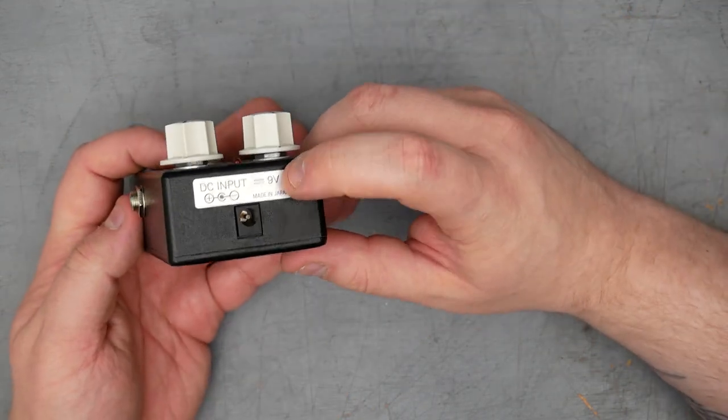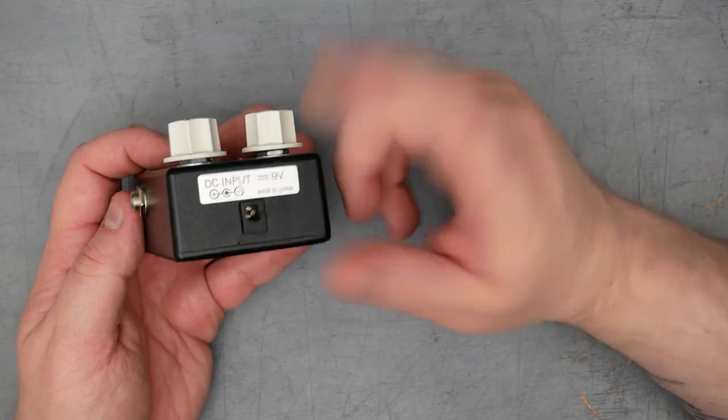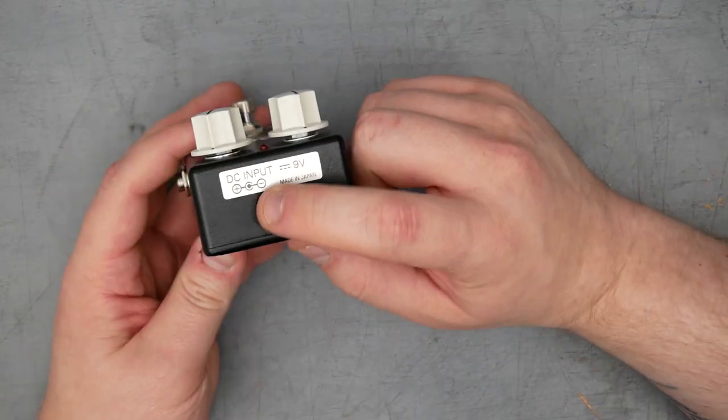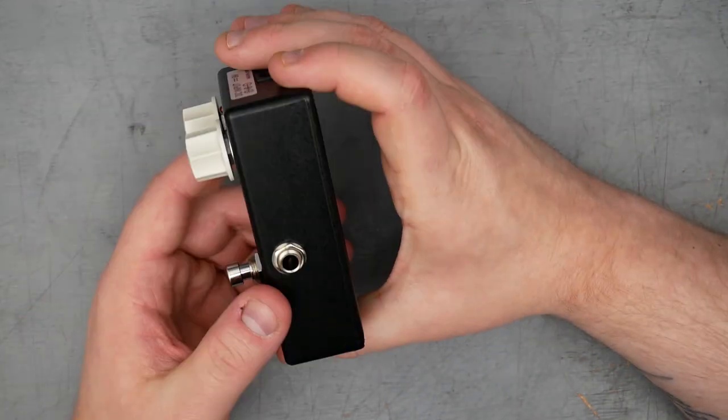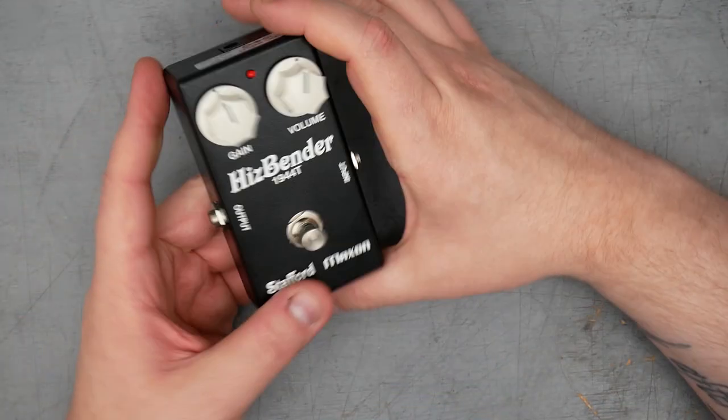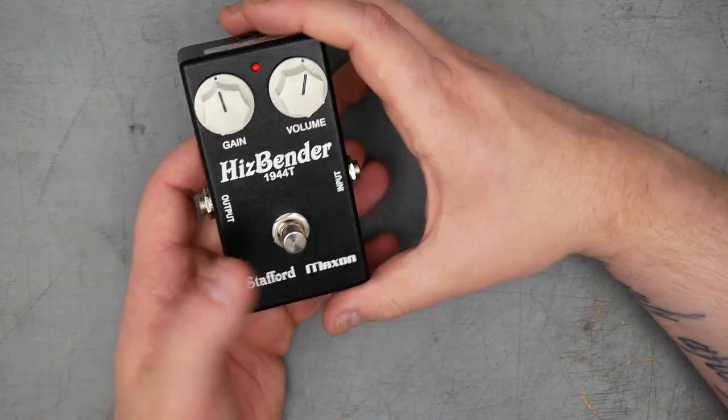We have a pretty standard made in Japan sort of Boss Ibanez style or Maxson style DC input sticker here with the DC input center negative. Outside is a sort of a textured black paint. I don't know if it's powder coat or some sort of other material.